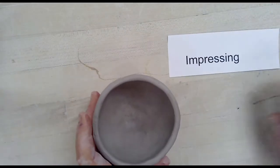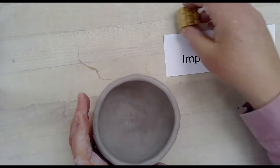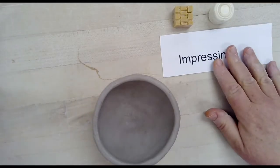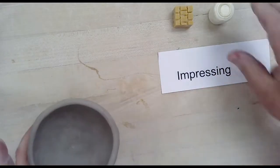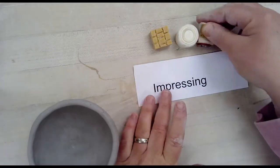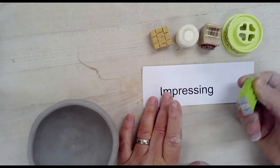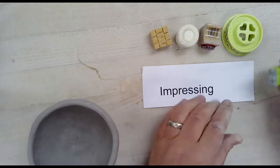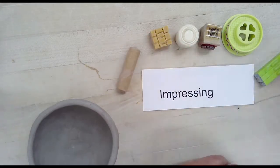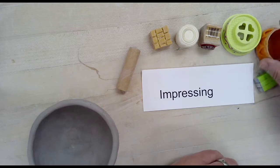The first technique I want to share with you is called impressing. This works best when your clay is plastic, and I find it actually works the very best on a flat slab which your tea bowl is not. So if you do use impressing you will need to be careful to not press so hard that you crack your bowl or distort the shape of it.